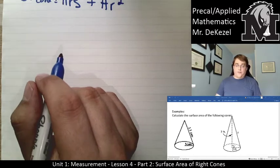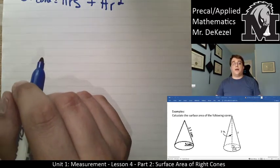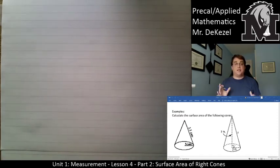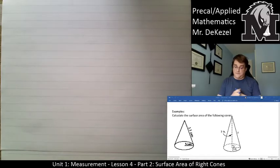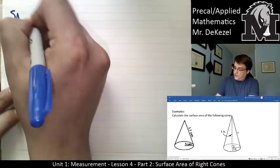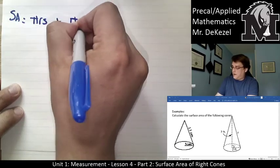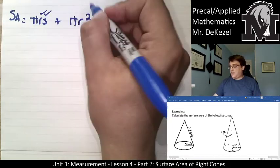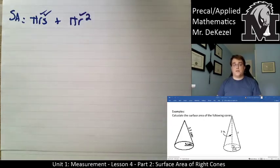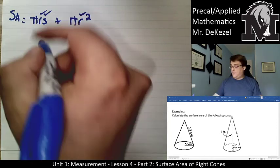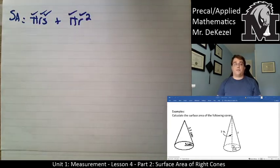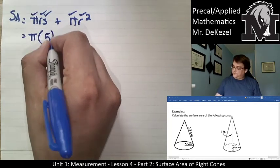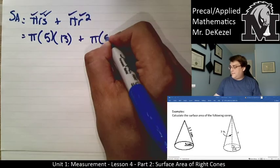Let's calculate the surface area of the following cones. For the one on the left, we are already given the slant height, so we won't need to use the Pythagorean theorem. The surface area of a cone is πrs plus πr². The radius is the distance from the middle to the edge, and the slant height goes from the apex to the circumference — both are given. So: π times the radius of 5 times the slant height of 13, plus π times 5 squared.